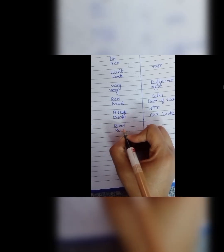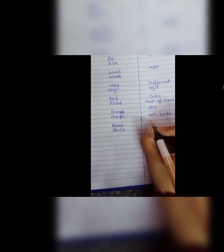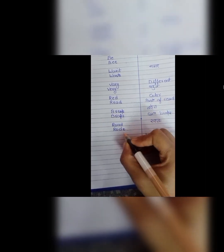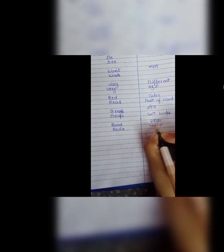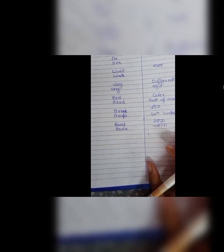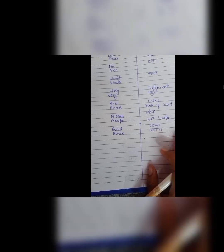Next is road and rode. Road R, O, A, D, road means rasta jho hoota hai road. And R, O, D, E means chalana rode. Jaise I rode my bicycle toh main apni bicycle jho hai chala raha hoon on the road R, O, A, D, road.